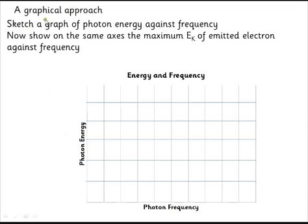Last little bit on this. A graphical approach to all this. So we start off with a graph of photon frequency against photon energy. Well, we know the shape of this graph, hopefully, because we know the equation E equals hf. So this is just a proportional relationship. If the photon's got twice the frequency, it will have twice the energy.